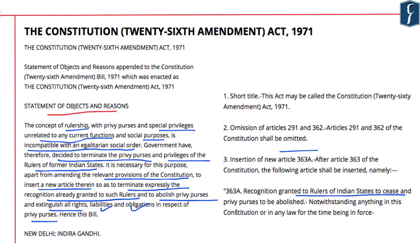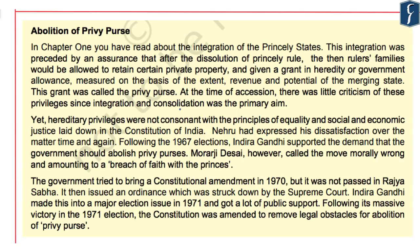The Constitution 26th Amendment Act 1971 inserted Article 363A into the Indian Constitution. Article 363A reads: 'Recognition granted to rulers of Indian states to cease and privy purses to be abolished.' Articles 291 and 362 were omitted from the Constitution, and the new Article 363A not only ceased recognition granted to rulers of Indian states but also abolished privy purses. Even though the Government of India had agreed in principle to give privy purses, previous Prime Ministers including Jawaharlal Nehru had expressed dissatisfaction over the matter.